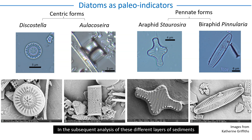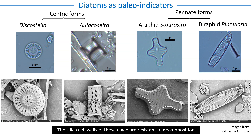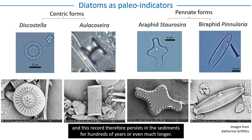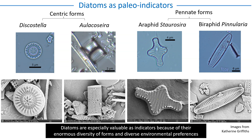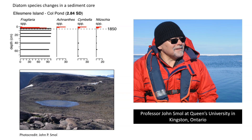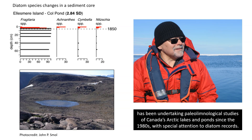In the subsequent analysis of different sediment layers, one of the most valuable indicators is the assemblage of diatoms. The silica cell walls of these algae are resistant to decomposition, and this record therefore persists in the sediments for hundreds of years, or even much longer. Diatoms are especially valuable as indicators because of their enormous diversity of forms and diverse environmental preferences. Professor John Small, at Queen's University in Kingston, Ontario, has been undertaking paleolimnological studies of Canada's Arctic lakes and ponds since the 1980s, with special attention to diatom records.